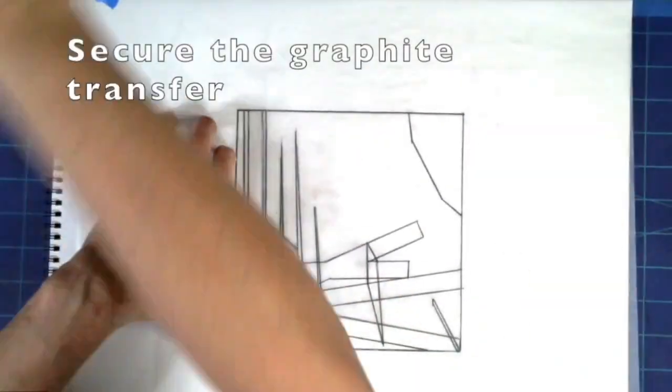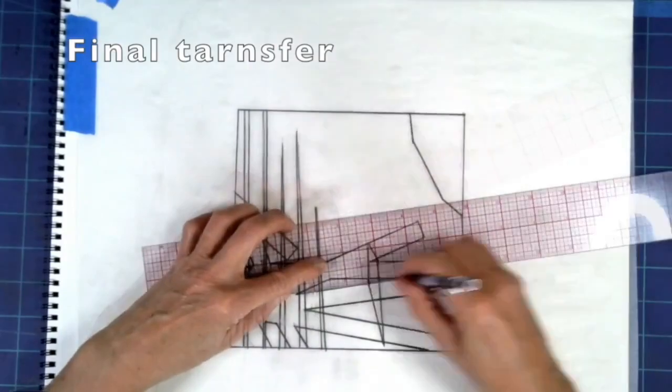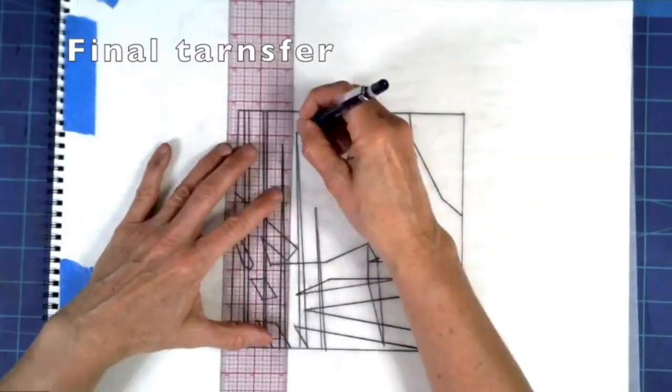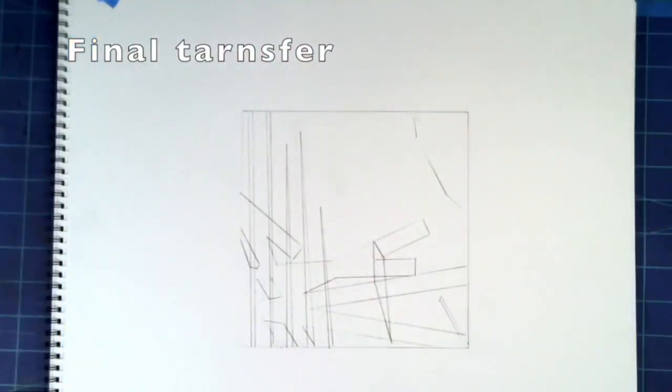I can tape my transfer onto that register and trace the graphite down onto the clean sheet of paper.